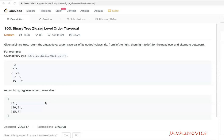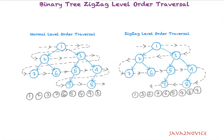Let's understand what zigzag level order traversal is. In normal level order traversal, we always traverse from left to right irrespective of which level we are on — the direction is the same for all levels. We always start with the root node, which is 1, then level 1 gives us 2 and 3, and the next level gives us 7, 6, 5, 4, then 9, 8.